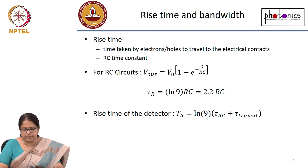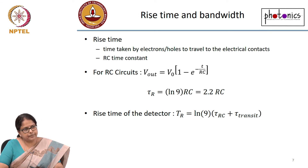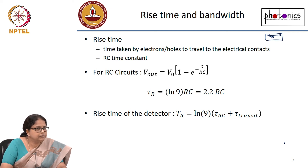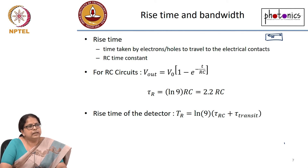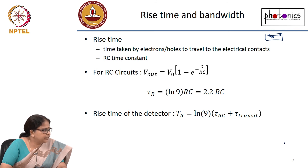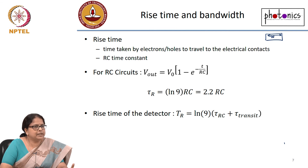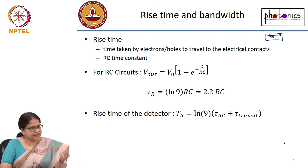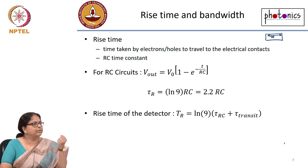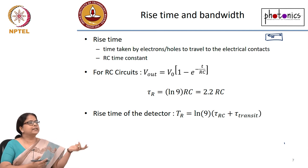The next thing we need to look at, as far as the detector is concerned, is rise time and bandwidth of the detector. We come back to the width of the depletion layer. Why would the detector take some time to respond? We are talking about the response time of the detector. If I want to transmit 10 gigabits per second, the detector's bandwidth should be larger than 10 gigabits per second, or its rise time should be faster. So the question is: what decides the bandwidth of the detector?